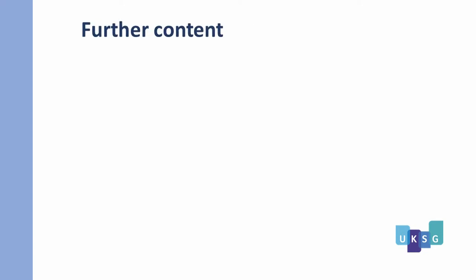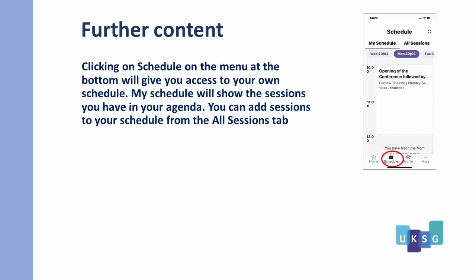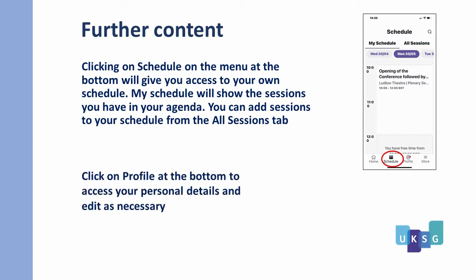Let's look at some further content. Clicking on Schedule on the menu at the bottom will give you access to your own schedule. My Schedule will show the sessions you have in your agenda and you can add sessions from the All Sessions tab. You can click on Profile at the bottom to access your personal details and edit as necessary.